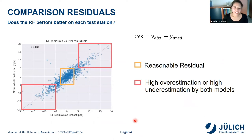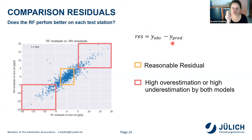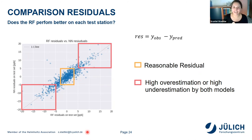Another question: is the random forest always better, even on stations where the neural network fails? I checked the residuals — defined as the observation minus the prediction. Plotting the random forest residual on the x-axis and the neural network residual on the y-axis, they appear almost perfectly linearly correlated, near the one-to-one line. On areas where both models fail — residuals above 10 ppb, nearly 15 ppb — both do a bad job. So the models tend to fail on the same stations.